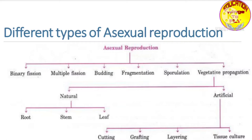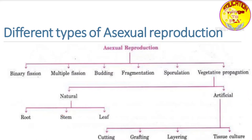Vegetative propagation is of two types: the first is natural and the second is artificial. Natural vegetative propagation means it happens on its own in nature, through roots, stems, and leaves. In artificial vegetative propagation, vegetative parts are also involved, but humans use these methods for their specific purposes.